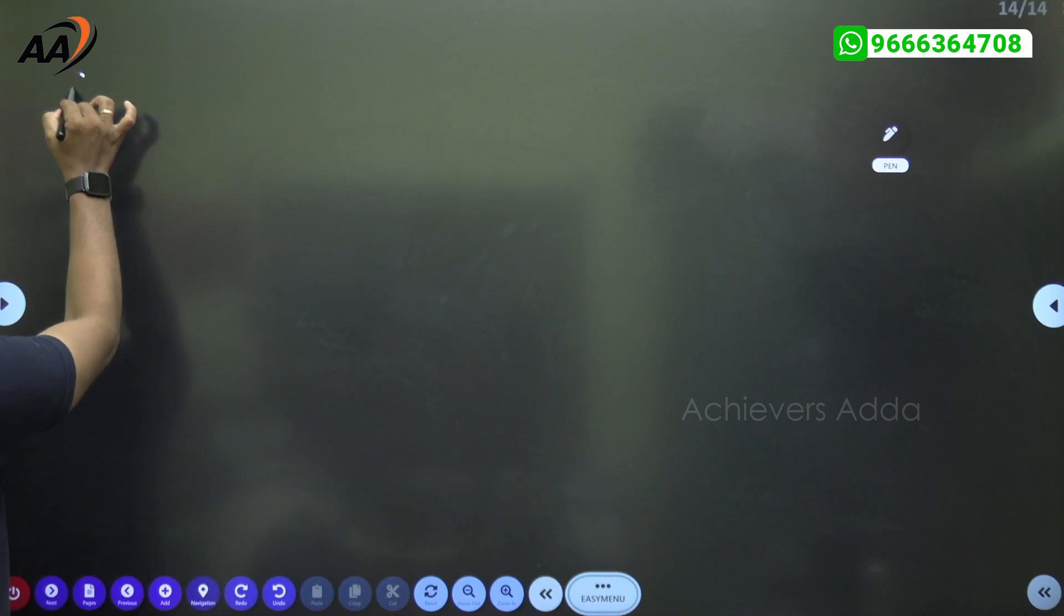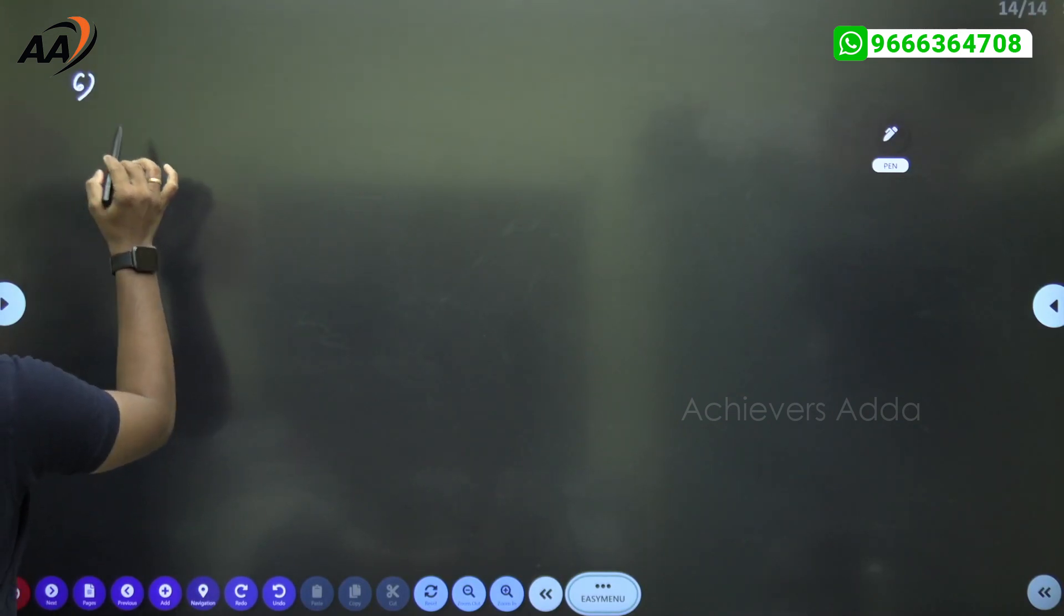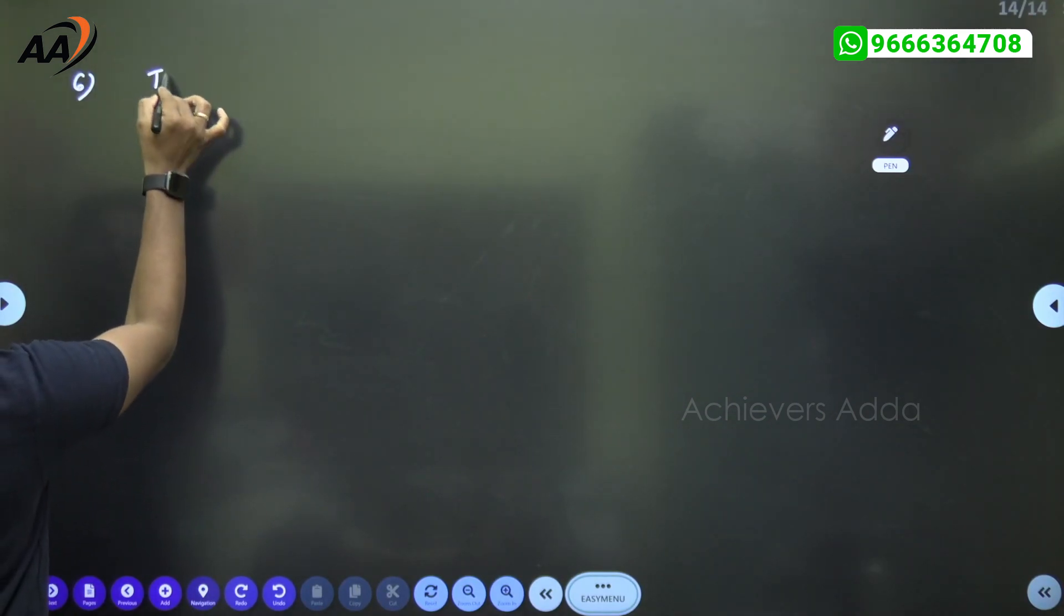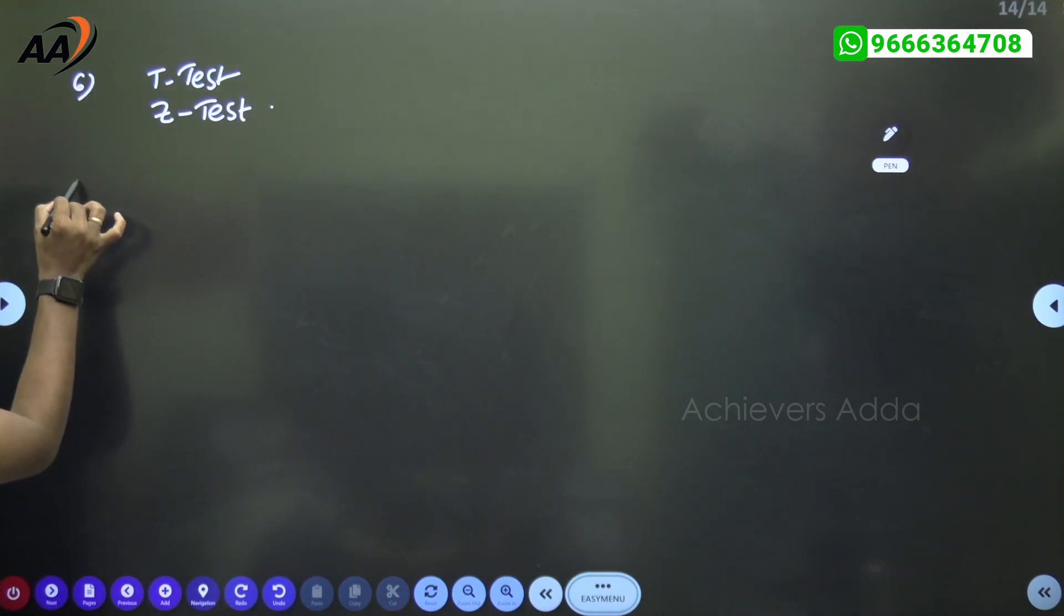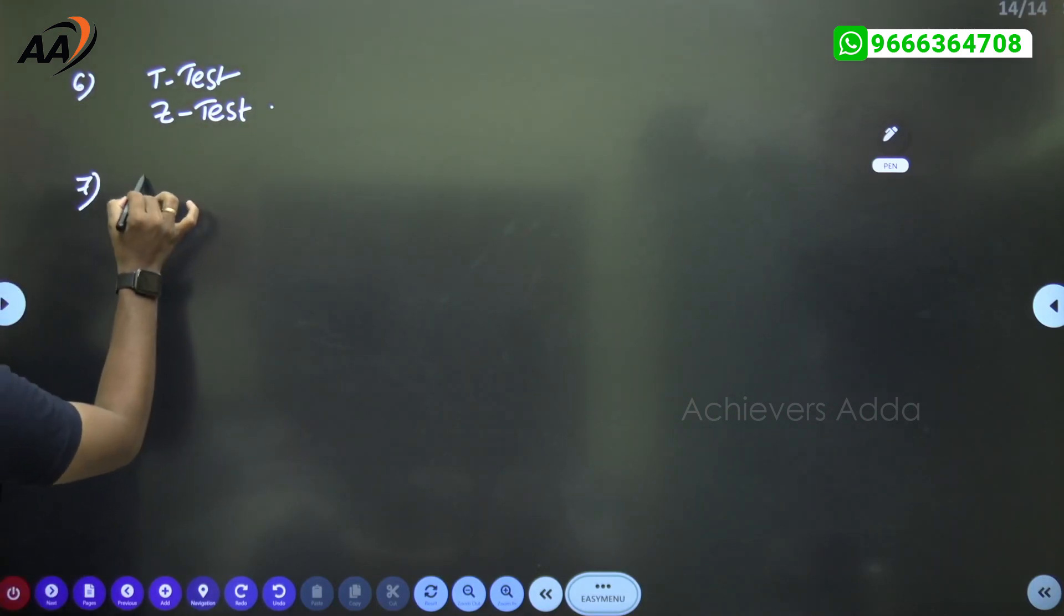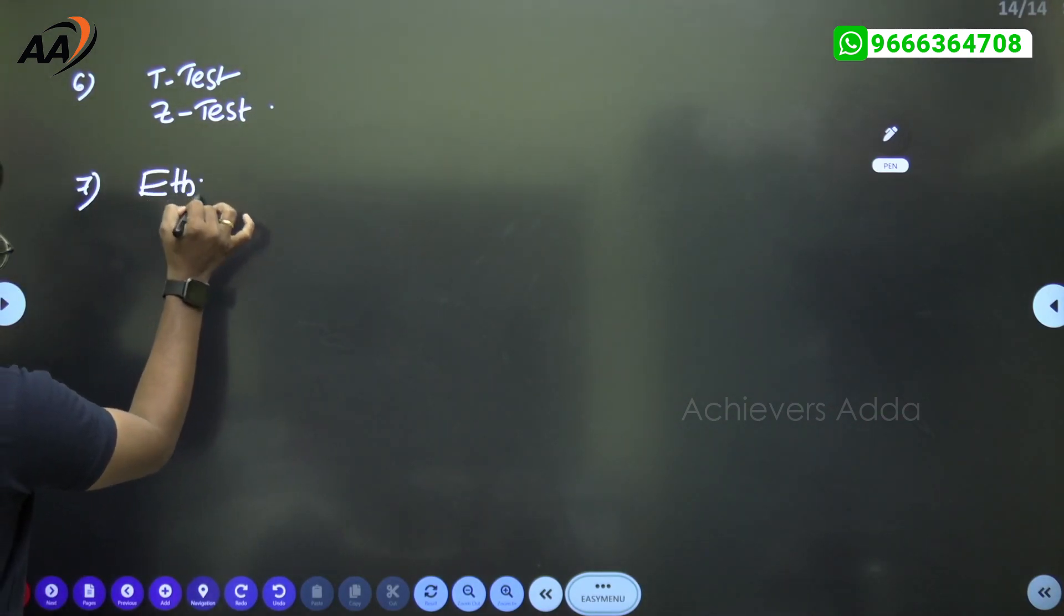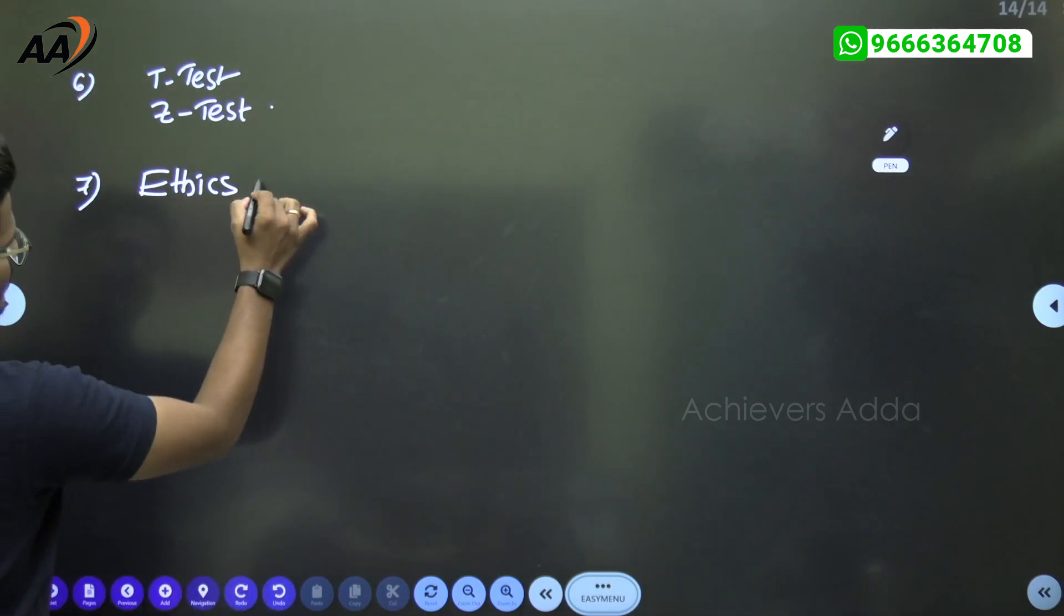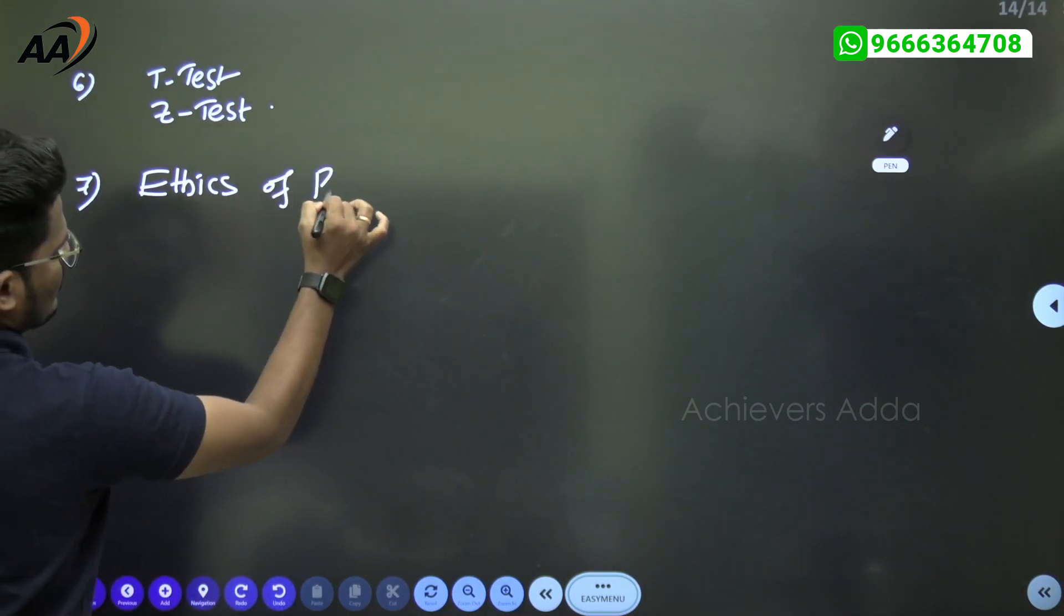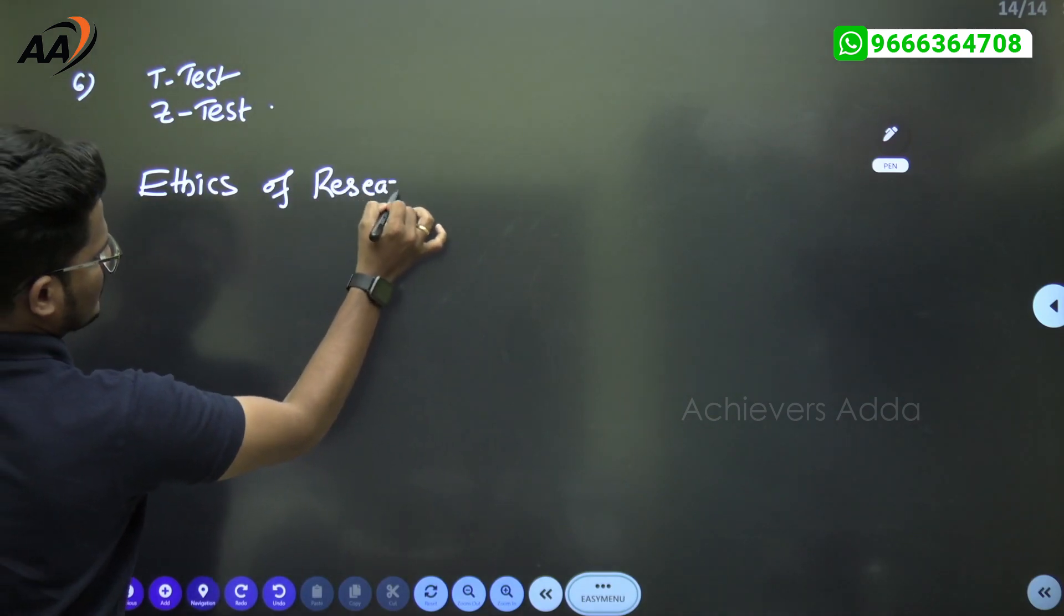Research aptitude: T-test, Z-test related match the following question, which are hypothesis testing. Next is ethics of research related question.